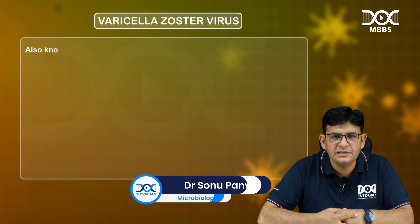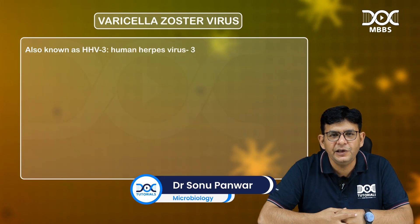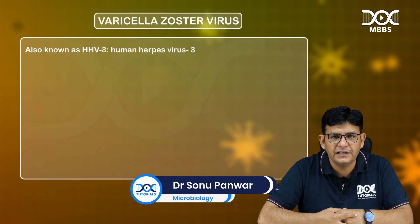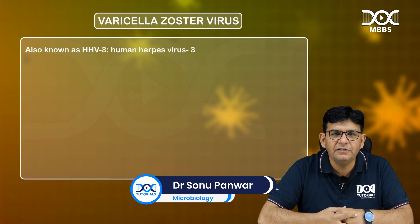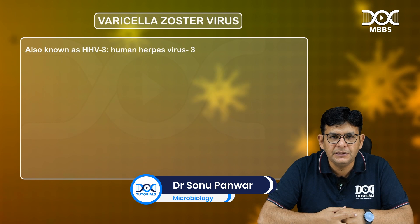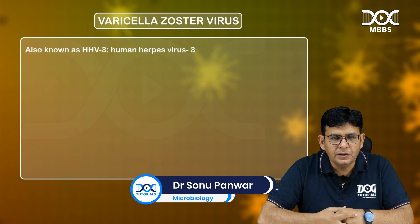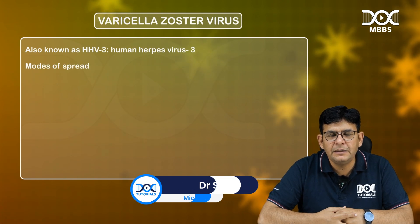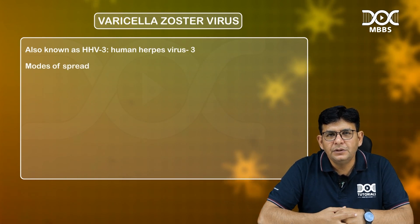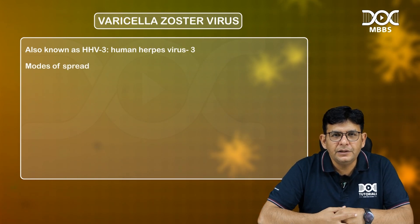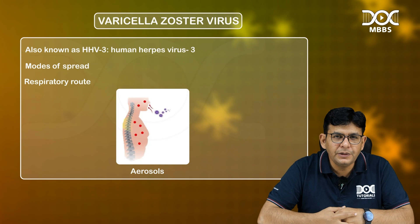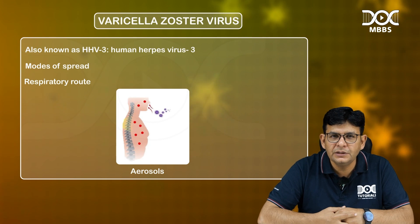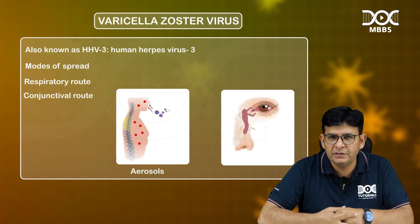Varicella Zoster is HHV3, Human Herpes Virus 3. The infection occurs through the respiratory route or through the conjunctival route.